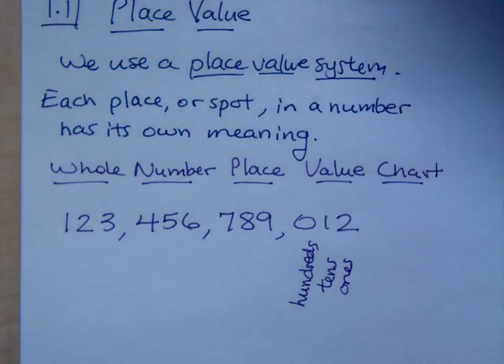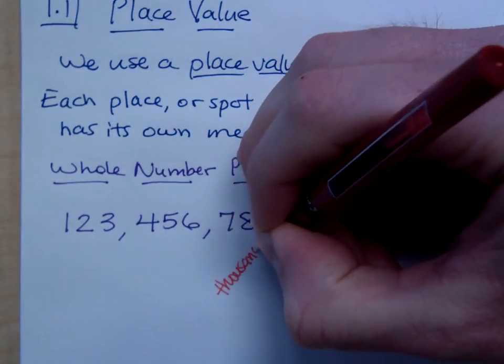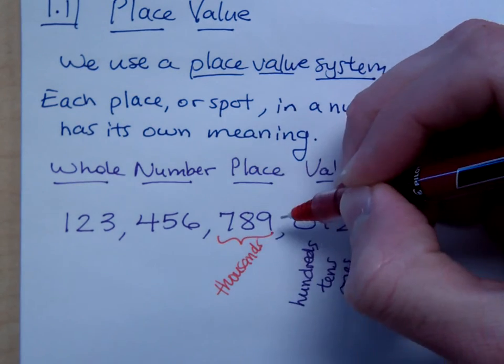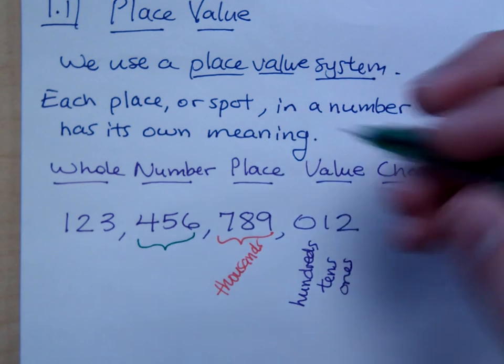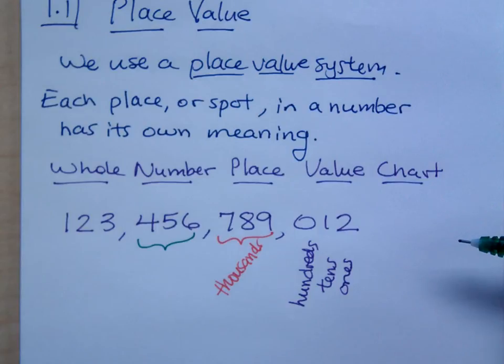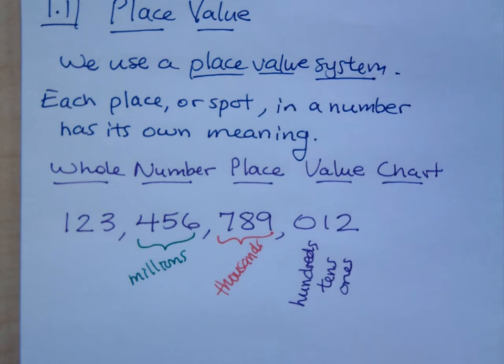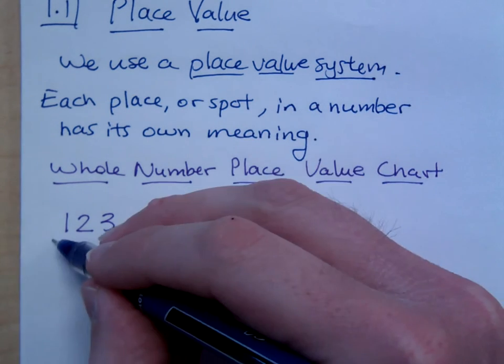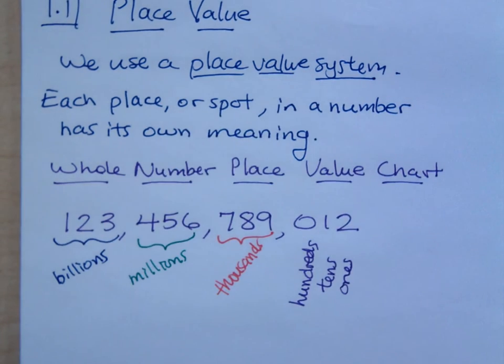So these are all measuring thousands. This whole group is. And then what about the next group? What is it measuring? This next set of numbers, what does it measure? This is measuring millions. And then the last set that we have here measures billions. If we were to make the number even larger, what's going to come after billions? Trillions. After trillions would come quadrillions, quintillions, sextillions, septillions, and so on.